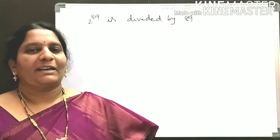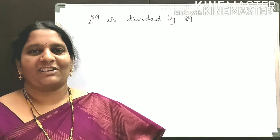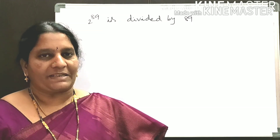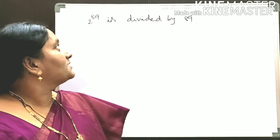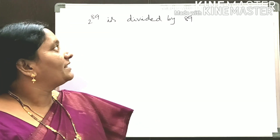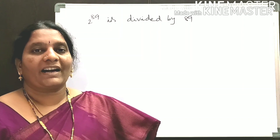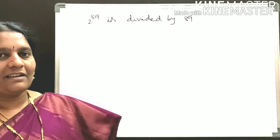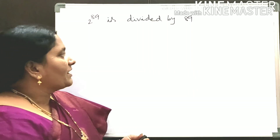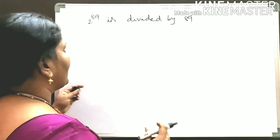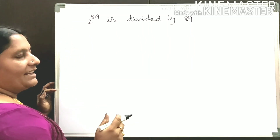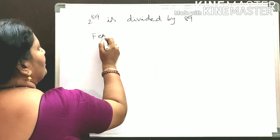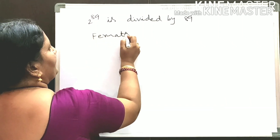Hello everybody, welcome back to another session of Mathematics Made Easy. Today our topic is number system. The question is: find the remainder when 2 to the power of 89 is divided by 89. For finding this remainder, we are going to use Fermat's theorem.